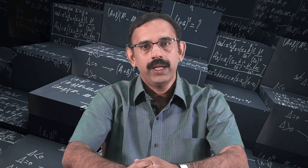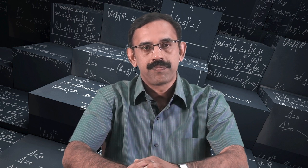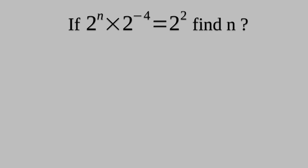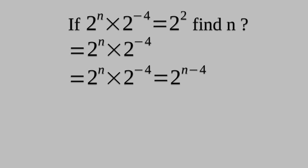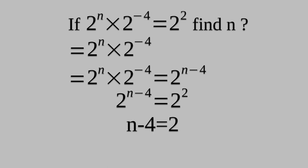Now let us try another problem. If 2 raised to n times 2 raised to minus 4 is equal to 2 square, what will n be? By the law of exponents, the left-hand side can be written as 2 raised to n minus 4. Then 2 raised to n minus 4 equals 2 square, so n minus 4 equals 2, and hence n equals 6.